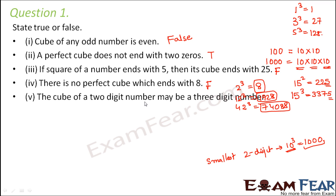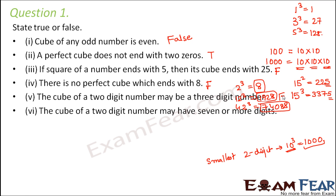The cube of a 2-digit number can never be a 3-digit number because there is no 2-digit number below 10. Since 10 cubed is 1000, a 4-digit number, for larger 2-digit numbers the cube will only have more digits, not fewer. So this statement is false.